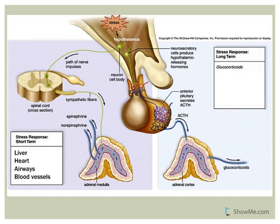Starting with the adrenal medulla — it is technically part of the sympathetic nervous system. The secretions from it include norepinephrine and epinephrine, with the majority being epinephrine. They will have similar effects on various target organs; here we'll review four of them, though they have a multitude of targets.